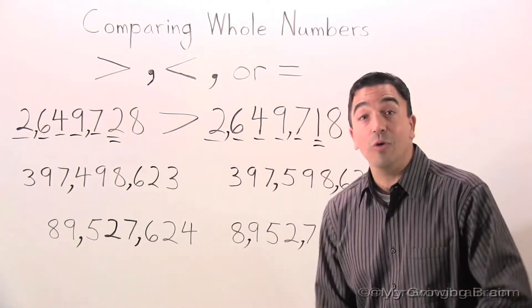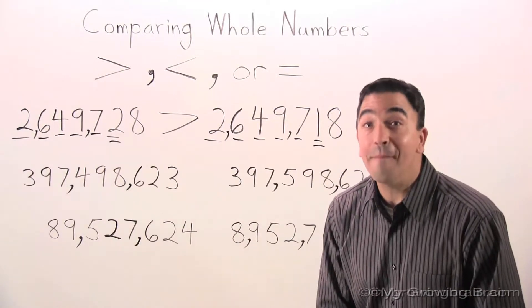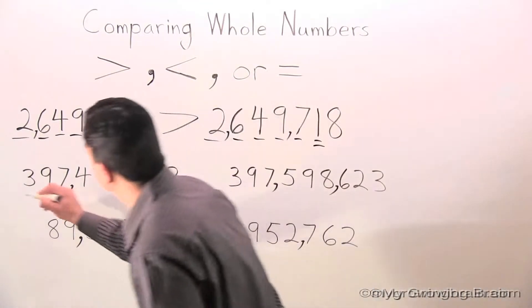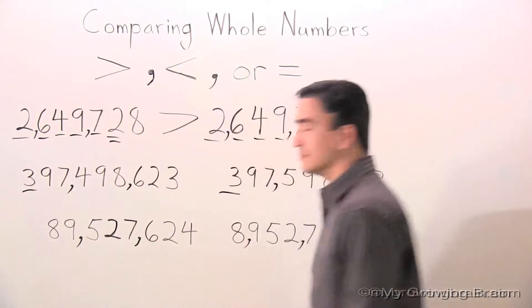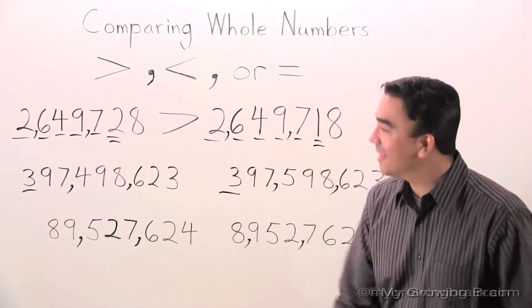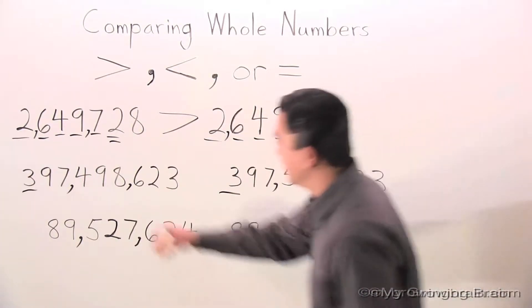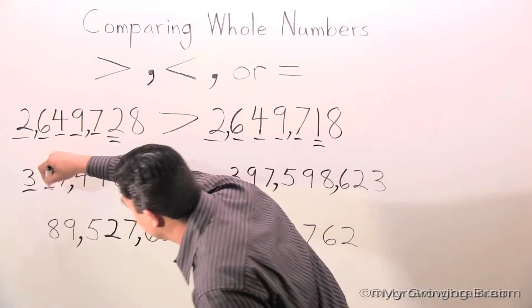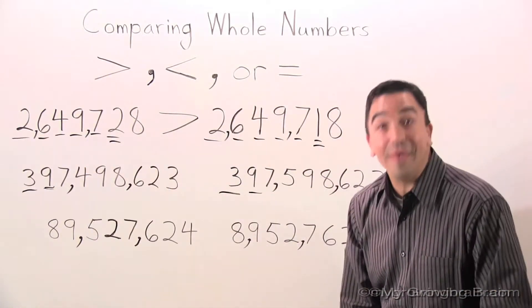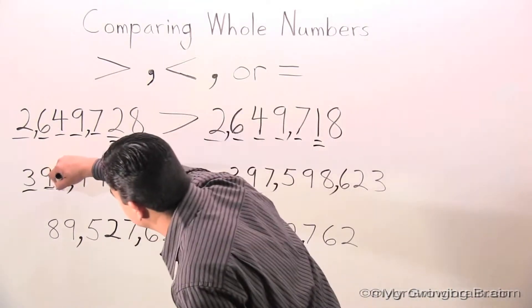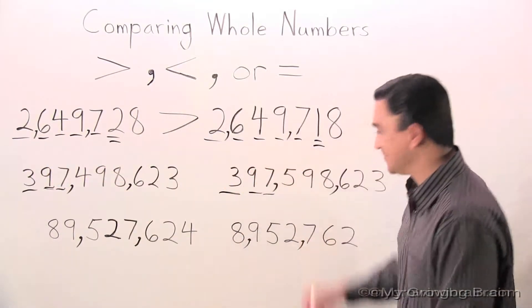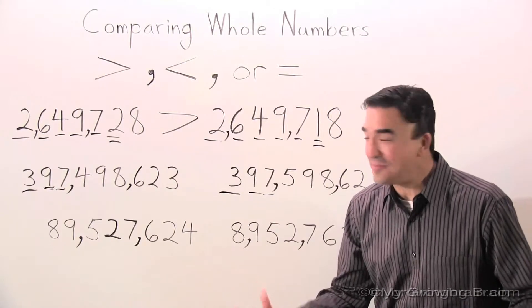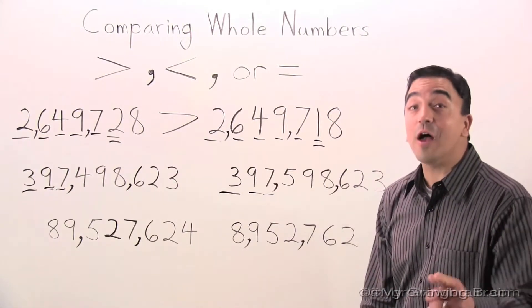So let's go to the hundred millions place. It's the same. Let's go to the ten millions. The same. Let's go to millions. Still the same. Let's go to the hundred thousands.